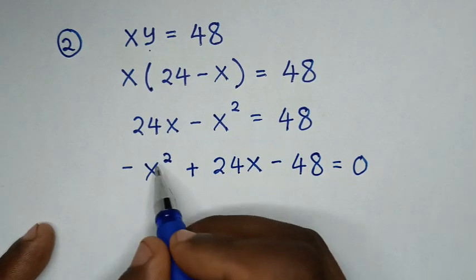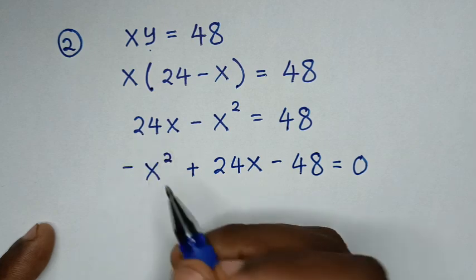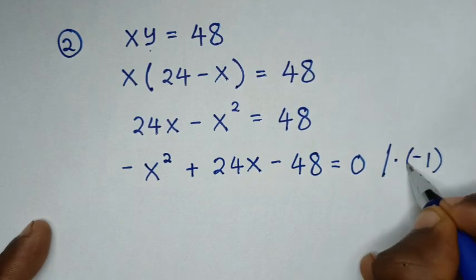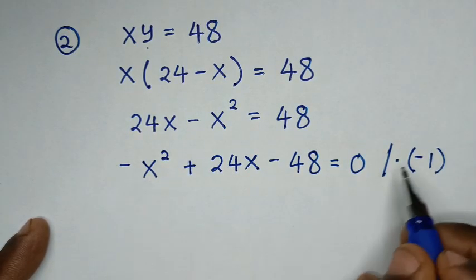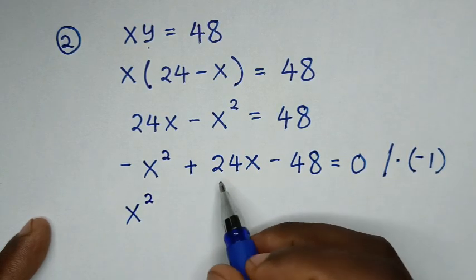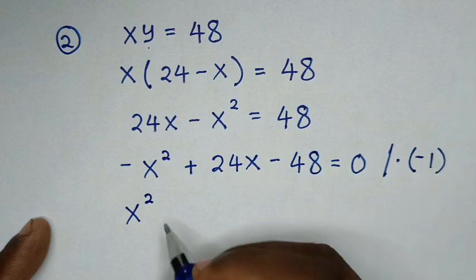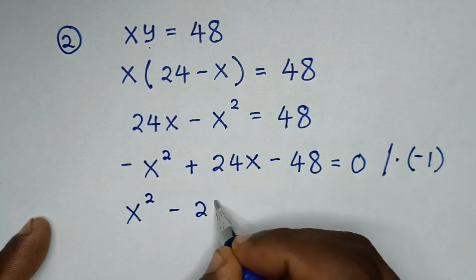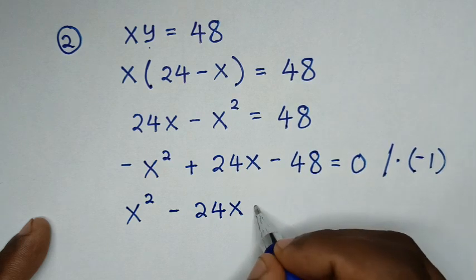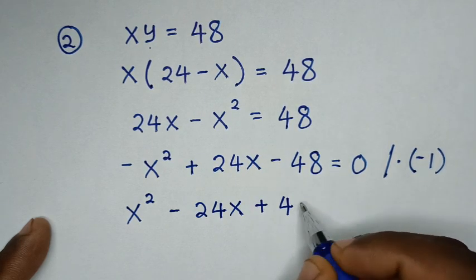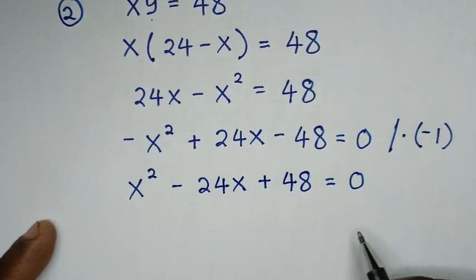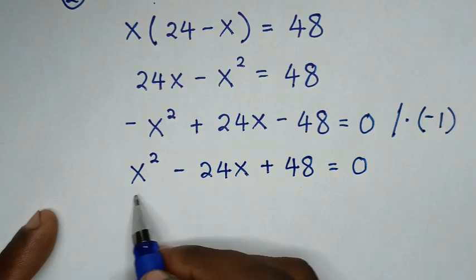Then in the next step, this minus x squared — we will multiply the whole equation by negative 1. So it will be negative x squared times negative 1 is positive x squared. Then positive 24x times negative 1 is minus 24x. Then minus 48 times negative 1 is plus 48, is equal to 0. Then from this quadratic equation, we will solve this by using the quadratic formula.